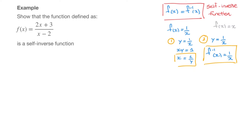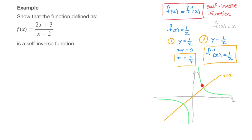Let me illustrate that. If I draw an xy grid, the line y equals x bisects the first and the third quadrant. Any self-inverse function is the mirror image of itself across that line. For the function f of x equals 1 over x, that's the curve y equals 1 over x, and we notice that this curve is the mirror image of itself across this line. If I could fold the screen along this orange line, then one portion of the curve would overlap with the other.